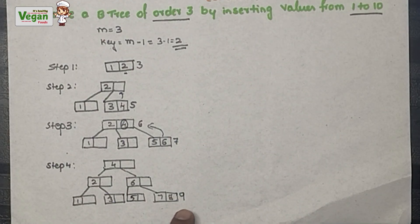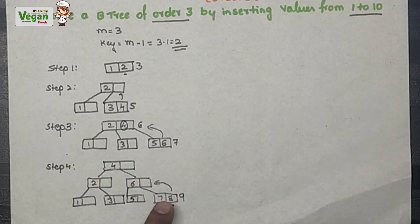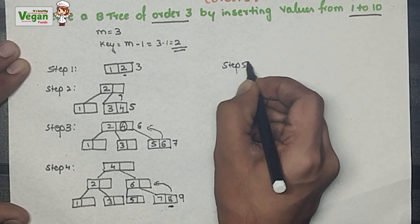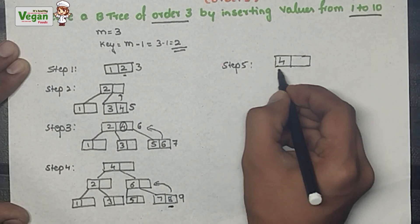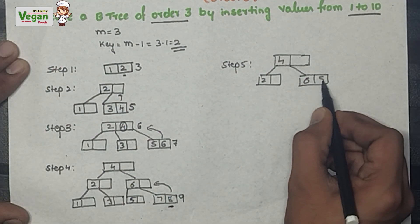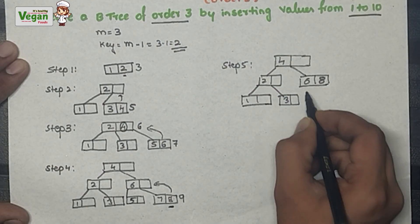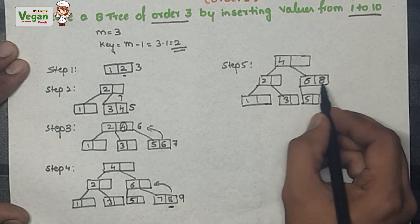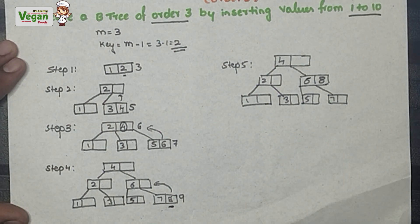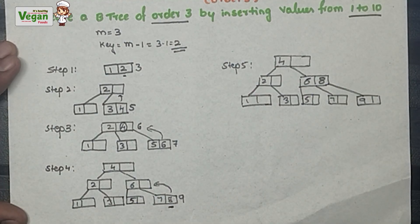Next, 8 is inserted and then 9. When inserting 9 there is no space since the maximum key value is 2. The median element 8 is shifted one level back to the parent. In step 5, 4 stays as root. 2 remains, and 8 — the median — joins 6 in the parent level. 1, 3, 5 remain in their positions. 7 is greater than 6, so it goes there. 9 is greater than 8, so it goes to the right. Finally, 10 is inserted since space is available.